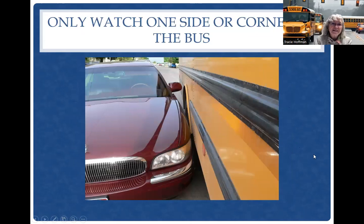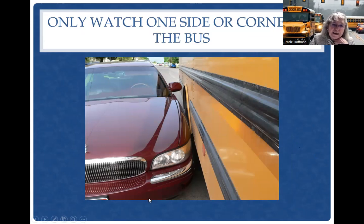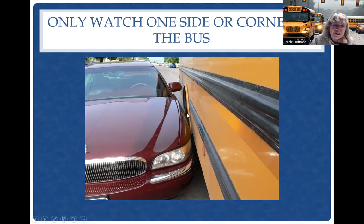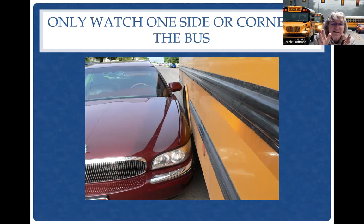We only watch one side or one corner of the bus. This driver was coming down the road and needed to pull in front of a car to park along the curb. As they were pulling up, they were watching something else — probably where the bus needed to be up front — and got too close to the car and made contact. The driver did a smart thing: they stopped. Sometimes we're focused on something else and part of our bus makes contact that we weren't watching.